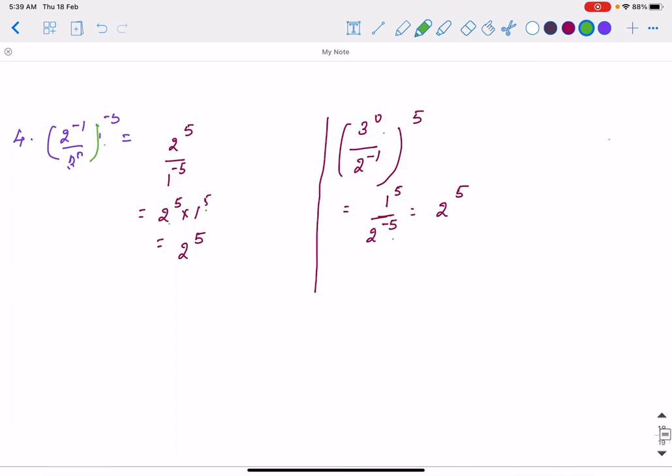Last question again, which is 3 to the power 0, minus 5. So minus 1 into minus 5 is 5. Here 1 here. So 2 to the power 5 into 1 to the power 5, the answer is 2 to the power 5 or 32.